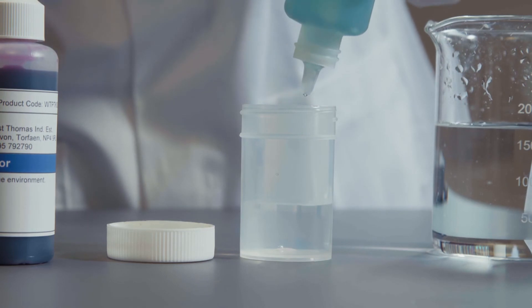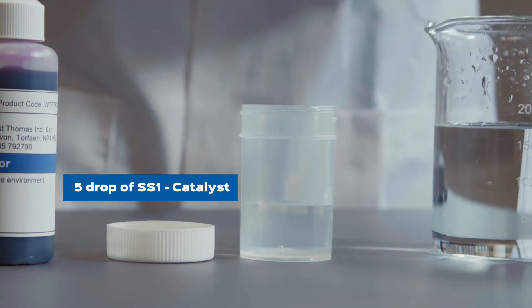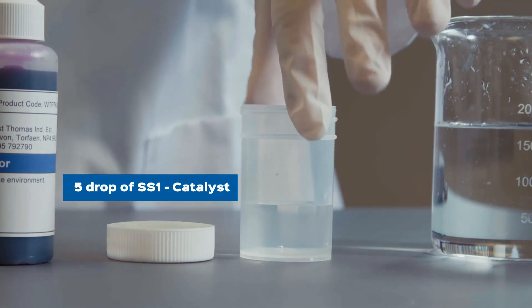Next, take SS1 catalyst and add five drops to the test sample by gently squeezing the bottle. Swirl the sample pot thoroughly to mix.